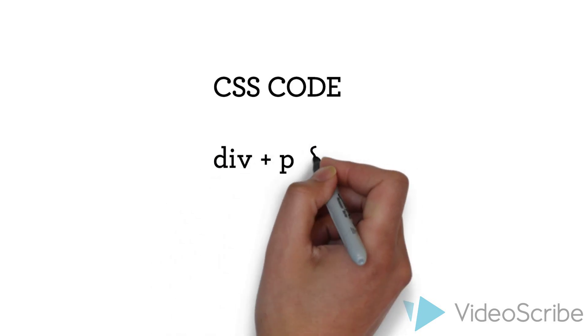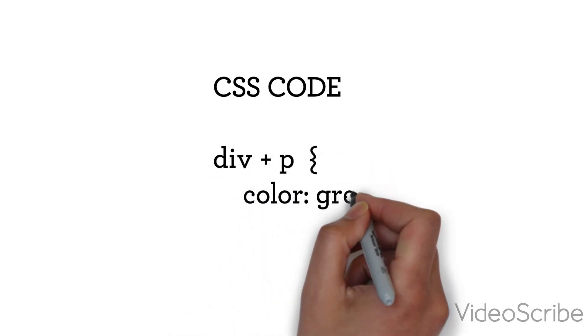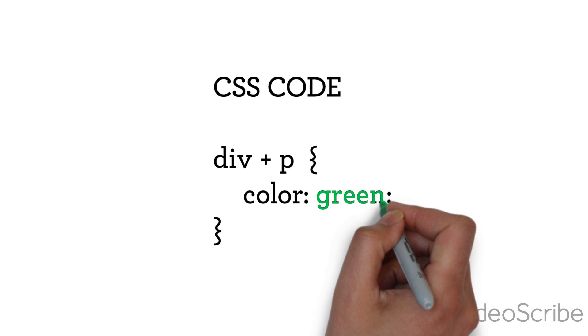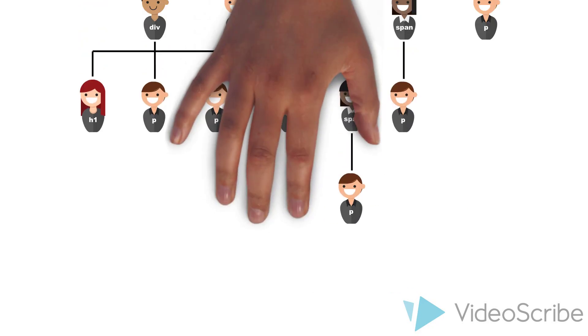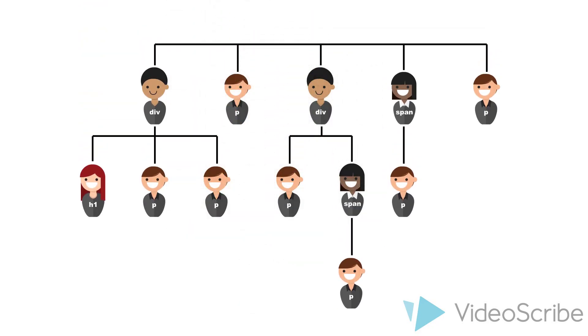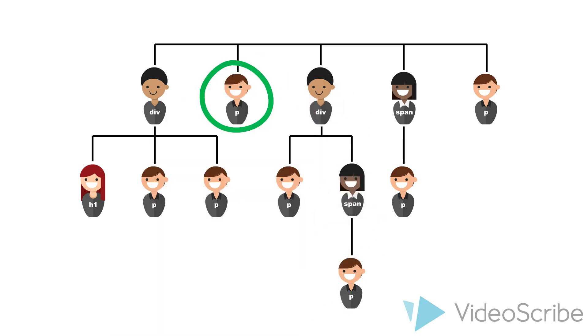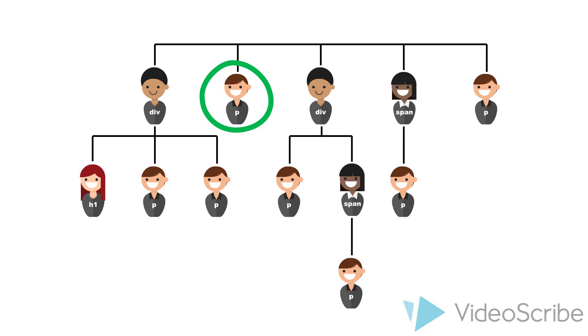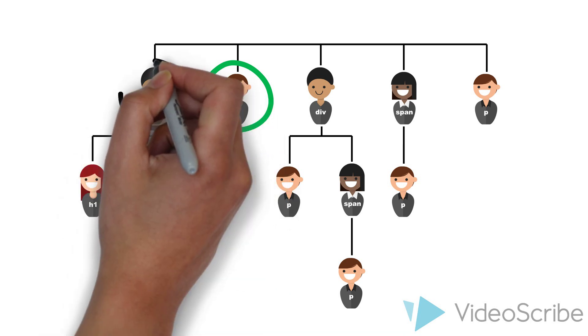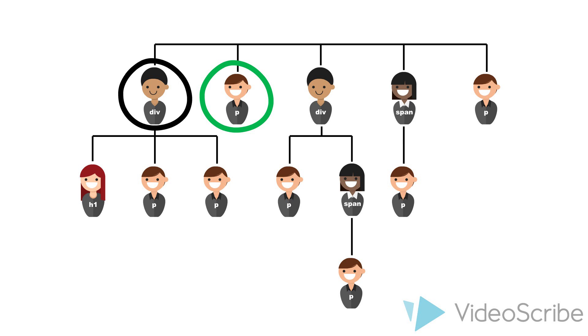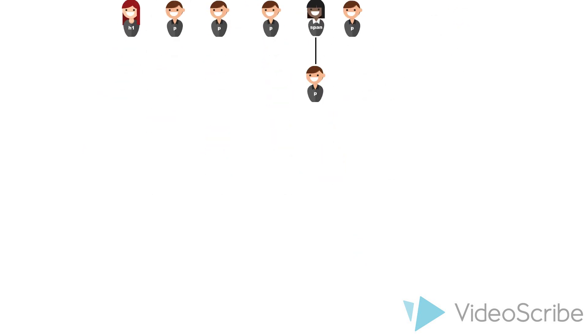Therefore, our example looks like the following, div plus p. And we want to change the color of the selection to green. As already mentioned, this is basically a special form of the general sibling selector, because it only selects one sibling. And only if it is literally the next in line. Adjacent means immediately following, so the siblings really have to be next to each other.